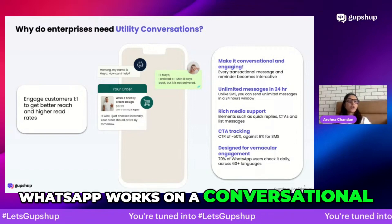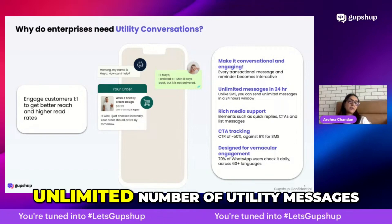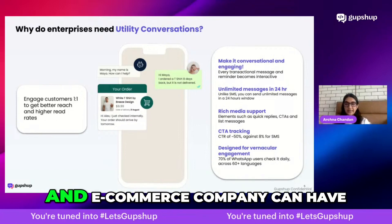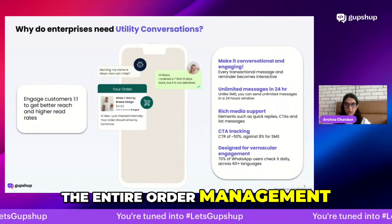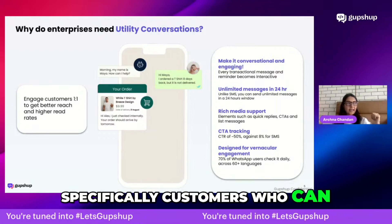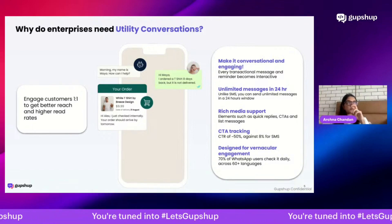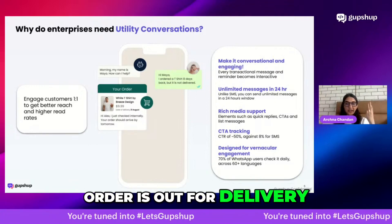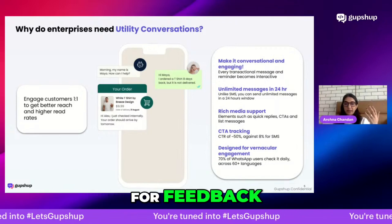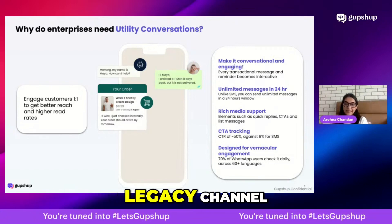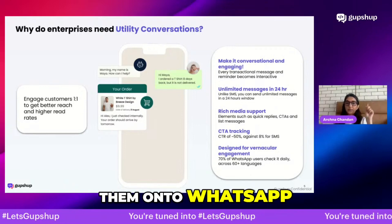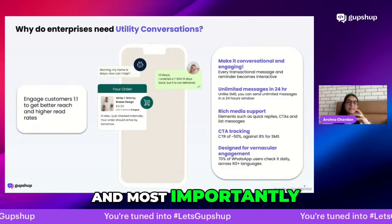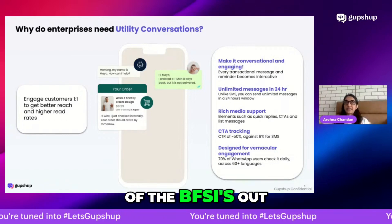Second, WhatsApp works on a conversational 24-hour basis, meaning you can send an unlimited number of utility messages within a 24-hour window. Any logistics or e-commerce company can manage the entire order lifecycle on WhatsApp — order packed, order shipped, order out for delivery, delivered, and a feedback request. Those five messages on a legacy channel can all be covered at the cost of one session on WhatsApp.